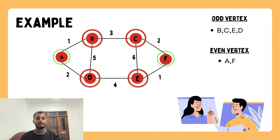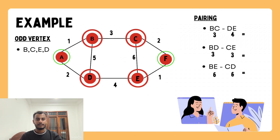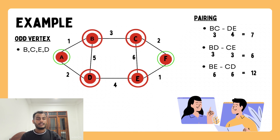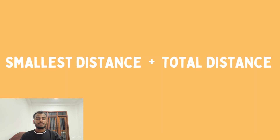Step two — find the shortest path between odd-degree vertices. The odd vertices B, C, D, and E are paired as follows: pairing B–C and D–E gives values 3 and 4; pairing B–D and C–E gives values 3 and 3; and pairing B–E and C–D gives values 6 and 6. The pairing B–D and C–E is the optimal choice because it has the smallest total value.